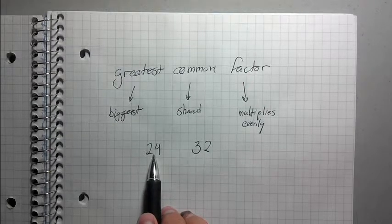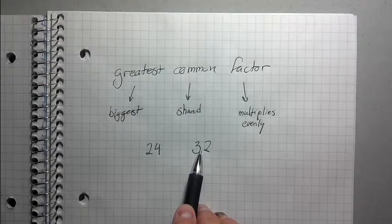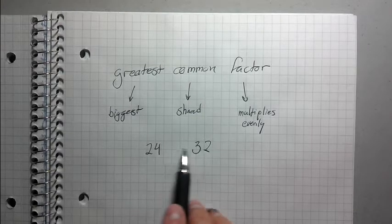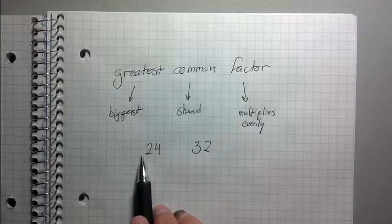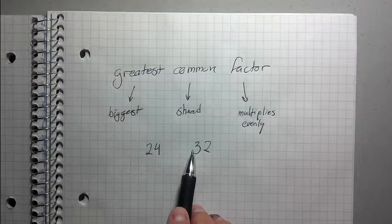I know 4 goes into 24. It goes into it 6 times. 4 goes into 32, 8 times. So 4 is a candidate. 4 has been nominated to be the GCF, but we need to still check. We need to think some more and think if there's any larger factors.